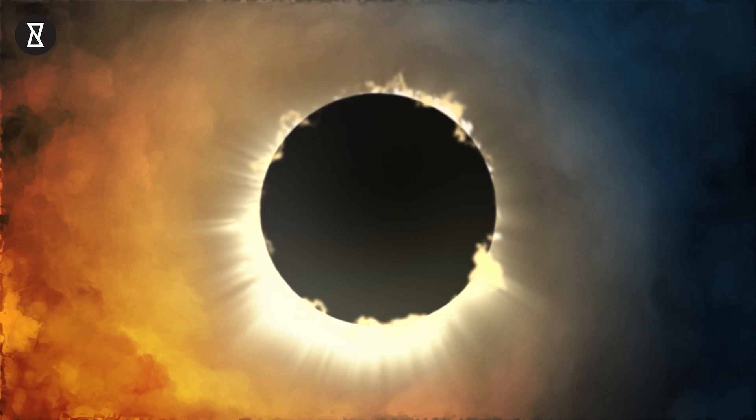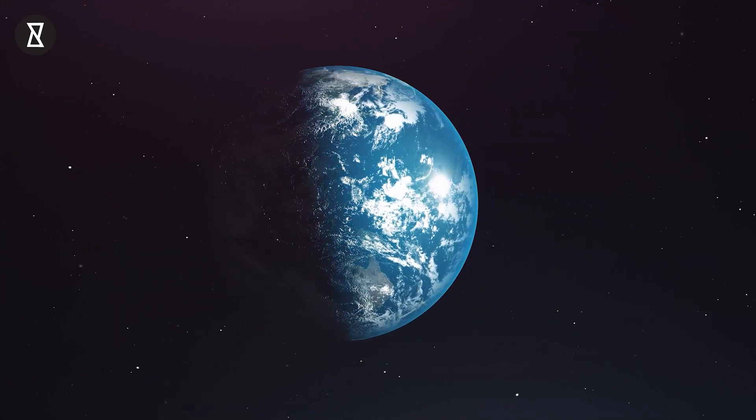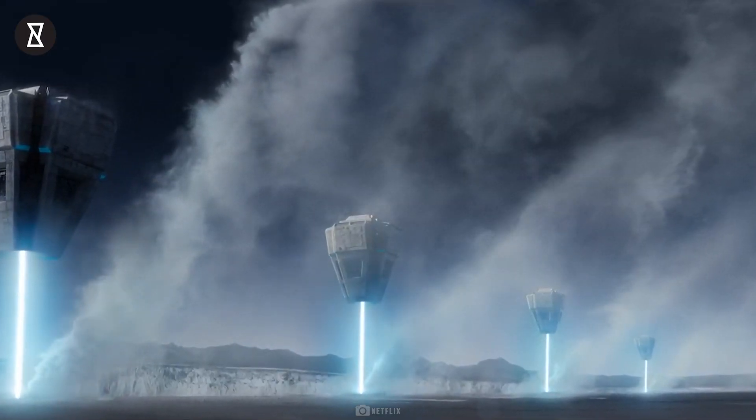Because only a tiny fraction of a star's energy emissions reaches the surface of any orbiting planet, building structures encircling a star would enable a civilization to harvest far more energy.